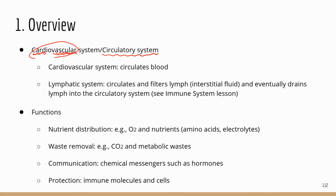I think the lymphatic system has an important role in protecting the body in terms of immune functions, so I prefer to put it along with the immune system. For now, I just want to mention its function related to circulation. The lymphatic system has a network of lymphatic vessels along with some lymph organs and tissues. The lymphatic vessels pick up lymph, circulate it through the lymph nodes and lymphoid organs, and eventually drain the lymph back to the cardiovascular system — back to the blood.